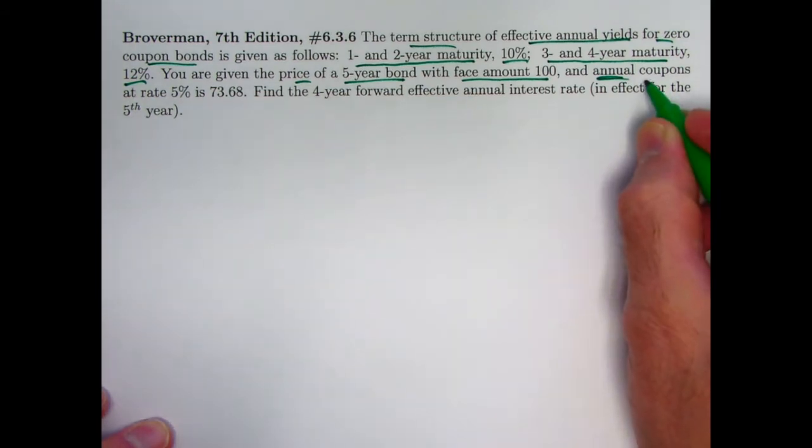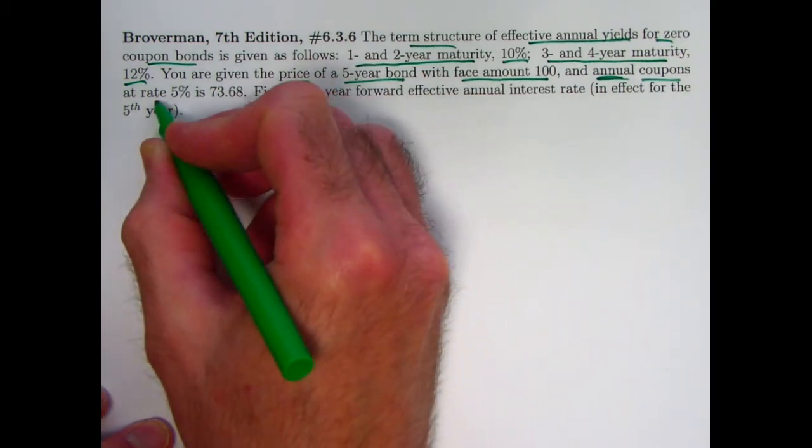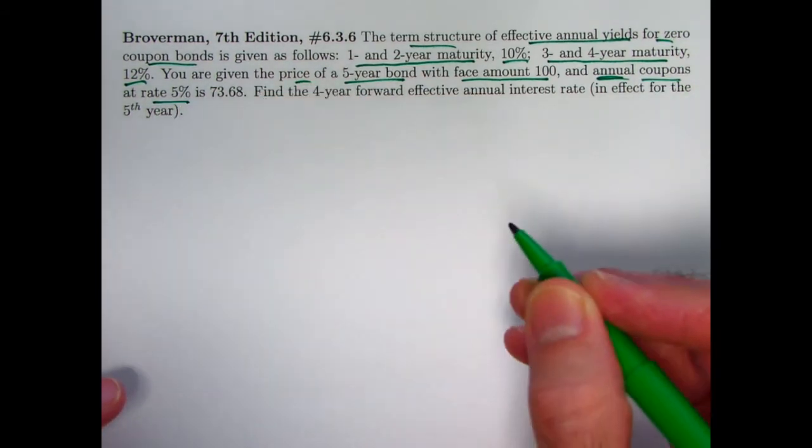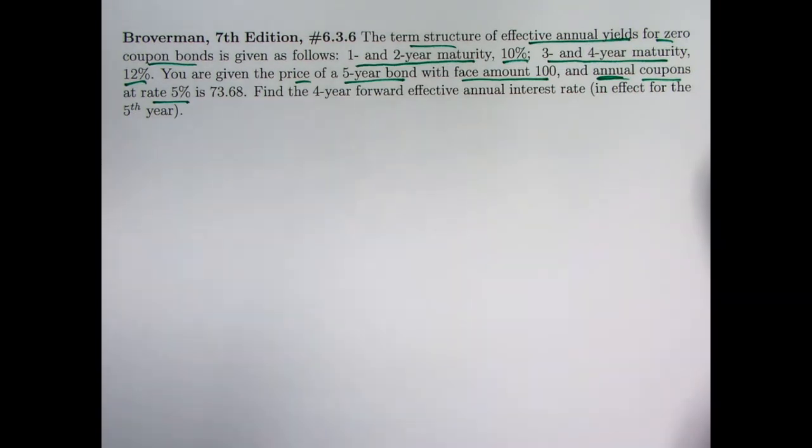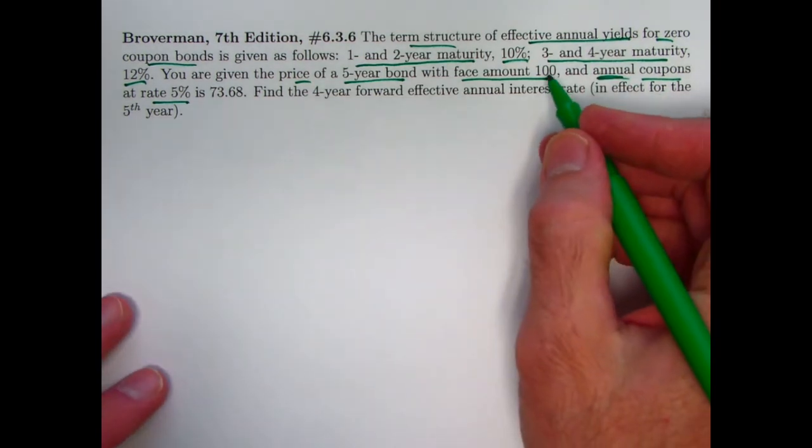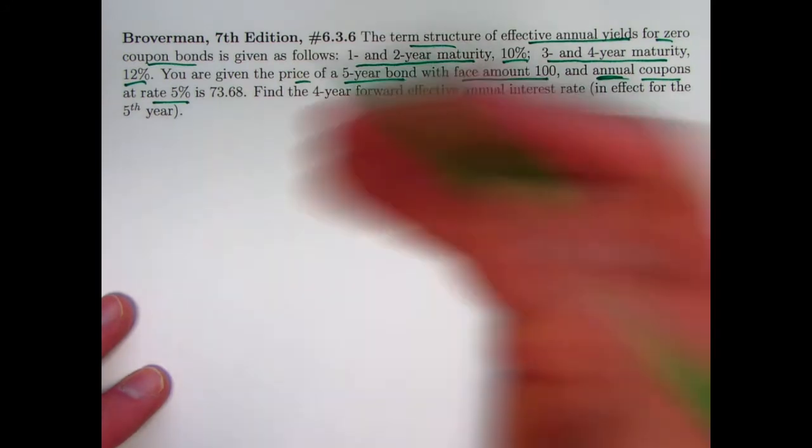You're also given the price of a five-year bond with face amount 100 with annual coupons, not semi-annual. The coupon rate is 5%, an annual rate. The coupons themselves are annual, so the coupon amount is going to be 100 times 5%, or 5.